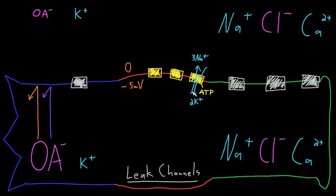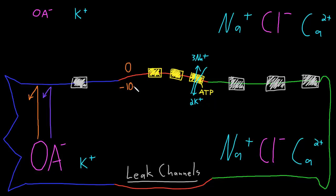By moving more positive charges outside the neuron than it's moving inside, that's going to make the membrane potential bigger — more negative inside the neuron membrane. The exact size of that change isn't certain, but it might be around negative 10 millivolts. So now we have a bigger membrane potential, but it's still probably too small for the neuron to function.